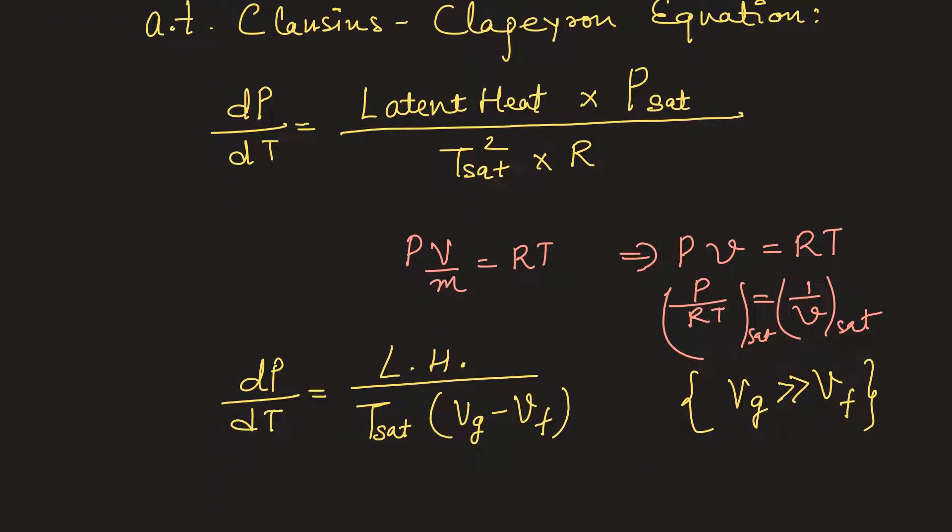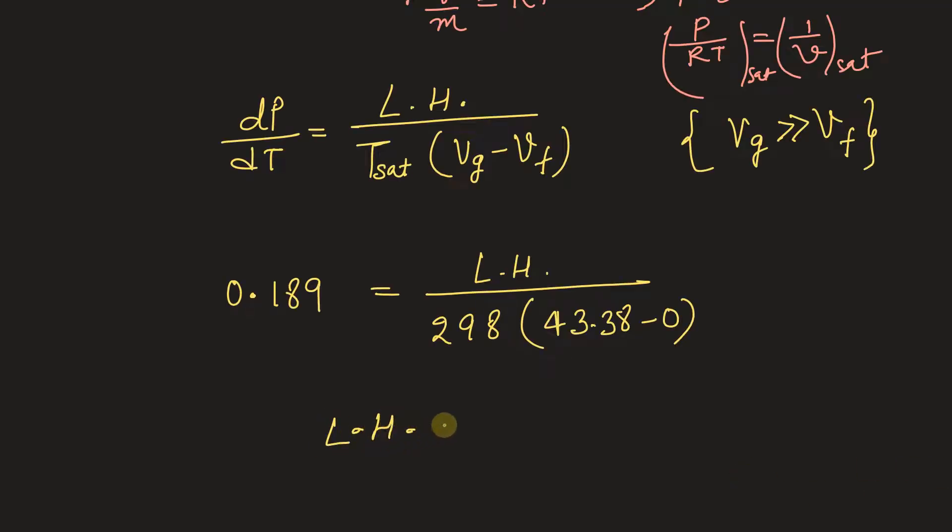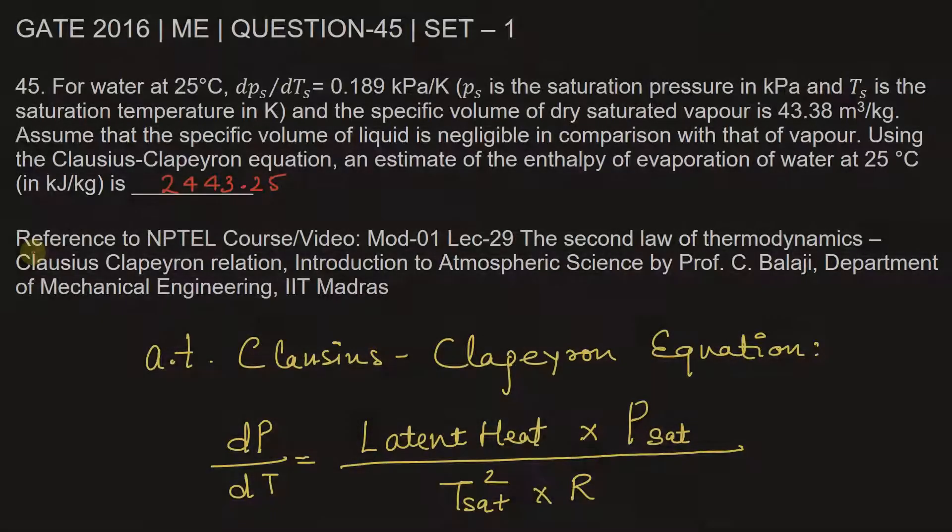In the problem, we are given dP by dT, that is 0.189. This is equal to latent heat divided by saturation temperature, that is 298 Kelvin, multiplied by Vg, which is 43.38 minus Vf, that is 0. From here, we get latent heat is equal to 2443.24 kilojoule per kilogram.